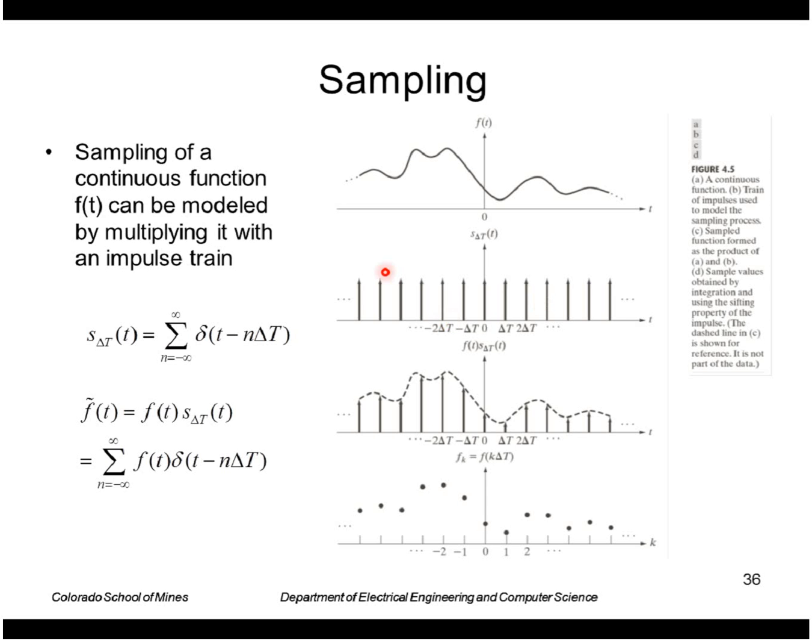Multiplying this times the continuous function basically just sifts out or picks off the values of f at these points. So I get a series of samples like this.